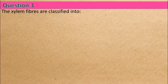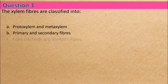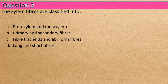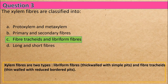Question 3: The xylem fibers are classified into — Option A: proto xylem and meta xylem, Option B: primary and secondary fibers, Option C: fiber tracheids and libriform fibers, Option D: long and short fibers. The correct answer is Option C: fiber tracheids and libriform fibers.